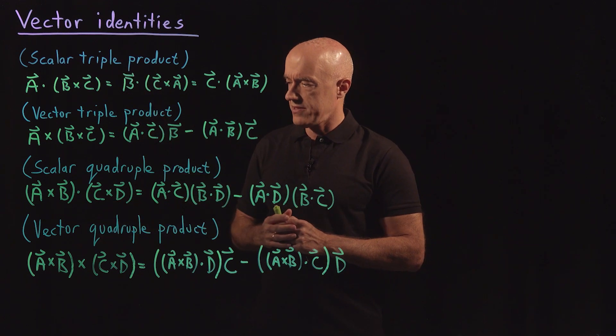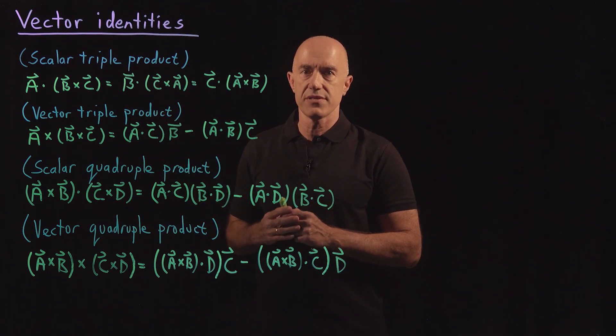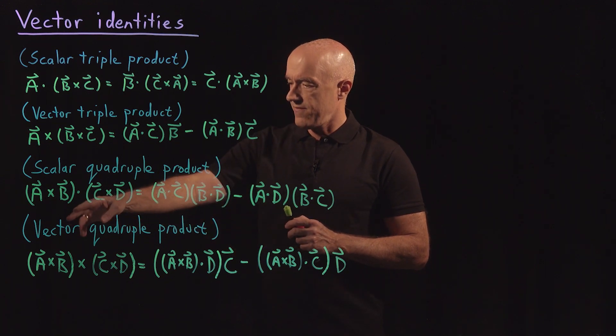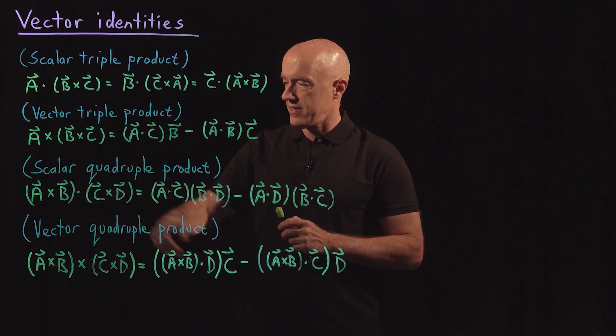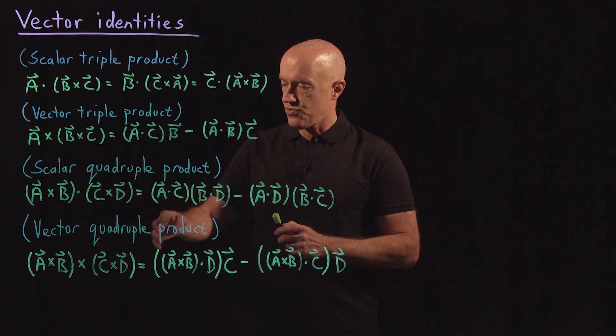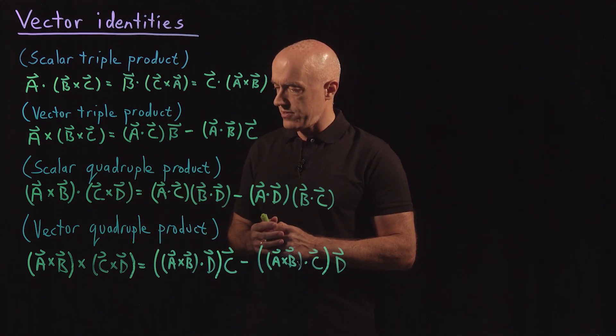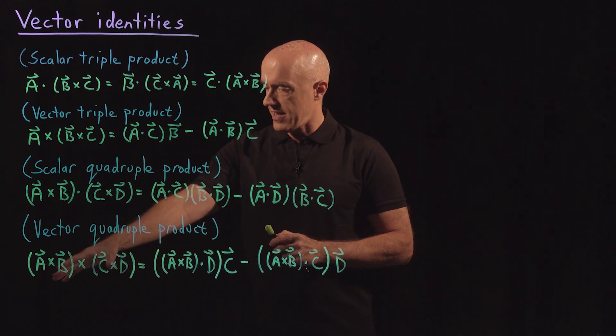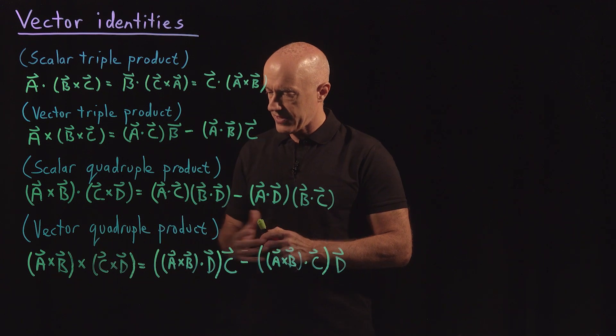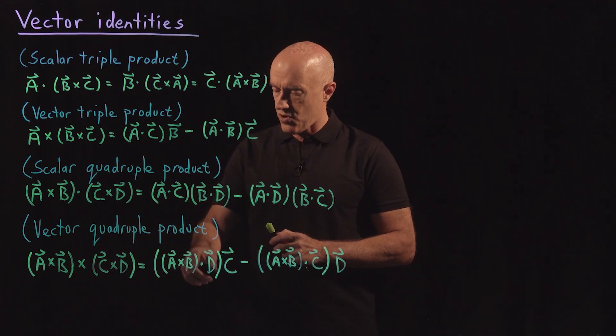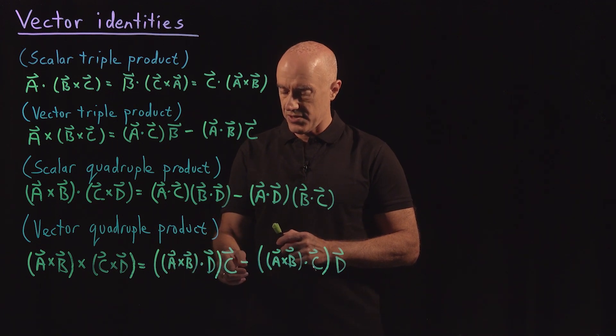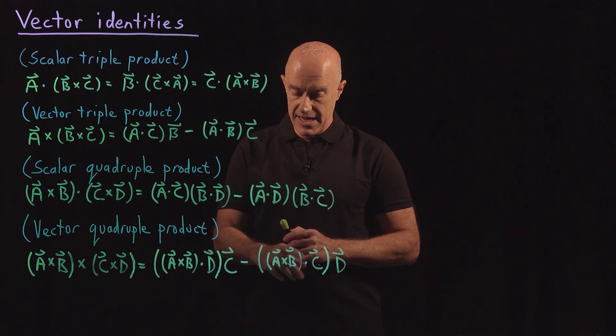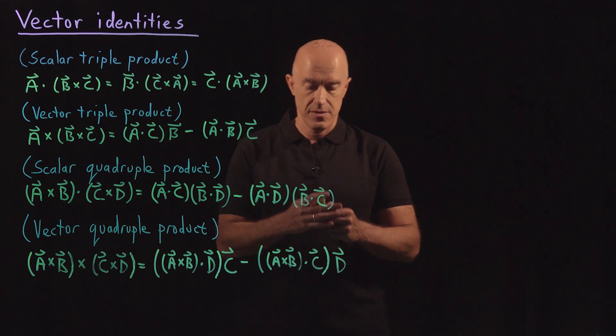The fourth one on this list, there are also other ones, but I'm going to just discuss these four. The vector quadruple product is a vector vector identity. Quadruple, so it has four vectors. It's (A cross B) cross (C cross D). So that's a vector cross a vector is a vector. That's equal to ((A cross B) dot D), that's a scalar, times C, a vector, minus ((A cross B) dot C), a scalar, times D, a vector.